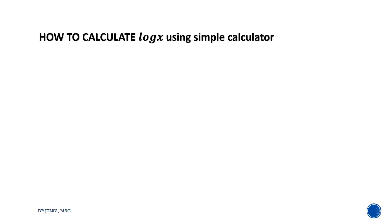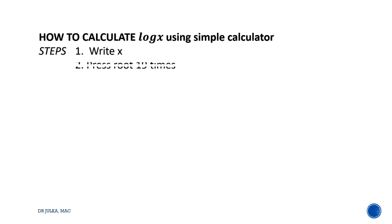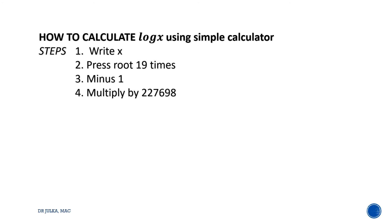How to calculate log x using a simple calculator. Step 1: write x in your calculator, then divide by 2.276698.